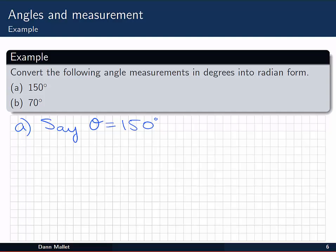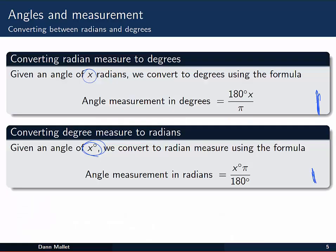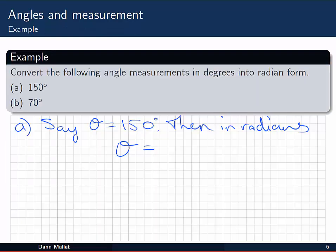Okay, so in the first example we're asked to convert 150 degrees to radians. I'm going to refer to 150 degrees as the angle theta. So you can see here I have the Greek letter theta. Then I can say, then in radians, theta is equal to, and I use the second formula, that the angle measurement in radians is x degrees times π divided by 180 degrees. So we have 150 degrees times π divided by 180 degrees.